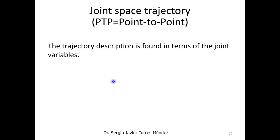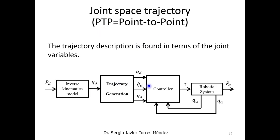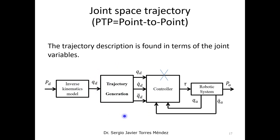Now let's focus on the joint space trajectory, or point-to-point control. We have the complete control diagram, but for this section we only focus on two blocks: the inverse kinematic model and the trajectory generation. We are going to eliminate the controller for now and only verify these trajectory generations.